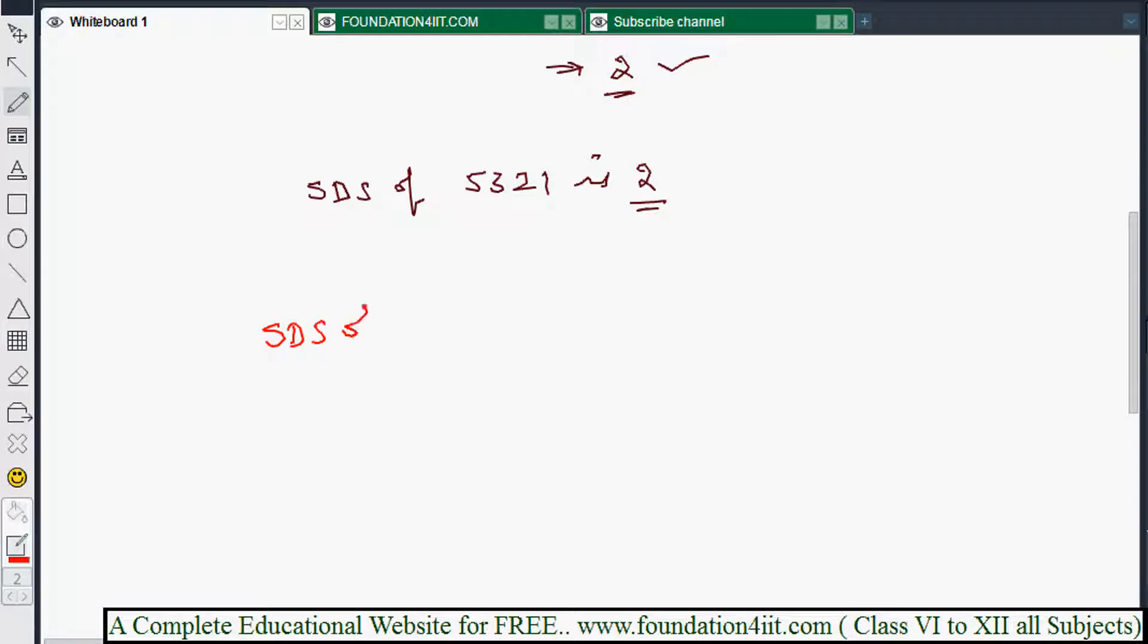What is the SDS, single digit sum, of 84796? Now what we need to do? We need to add each and every digit until you get single digit. Okay, that is 8 plus 4 plus 7 plus 9 plus 6.